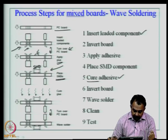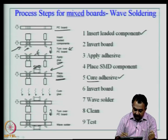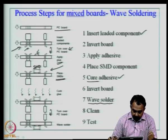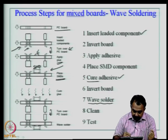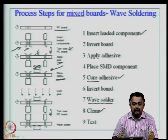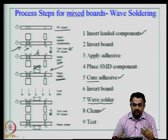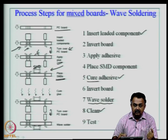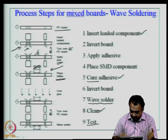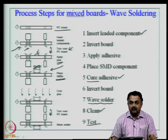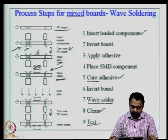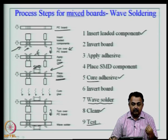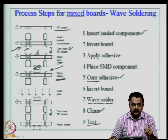Once the curing process is done, invert the board and send it for wave soldering. Attachment takes place for both SMD and through-hole components. After this process, clean the board with isopropyl alcohol to remove oxides and foreign particles from the wave soldering process. Then perform an electrical test for shorts and opens to qualify the assembled board. This is a typical process step for wave soldering using a mixed board design.